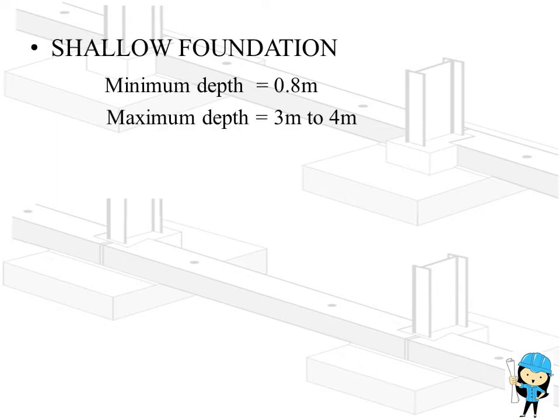So initially, it is shallow foundation. For shallow foundation, minimum depth is 0.8 meter and maximum depth is 3 meter to 4 meter. So in case of shallow foundation, we can directly take the depth between 0.8 to 3 or 4 meter.